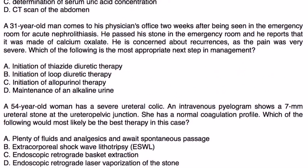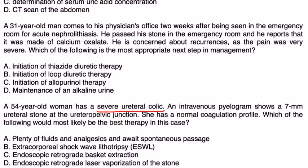And finally, a 54-year-old woman has a severe ureteral colic. An IV pyelogram shows a 7mm ureteral stone at the ureteropelvic junction. She has a normal coagulation profile. Which of the following would be most likely best therapy in this case? All right, well, let's go through these one by one. 7mm is kind of big. Remember, there was that cutoff - 5.